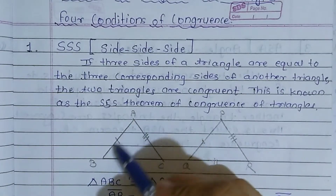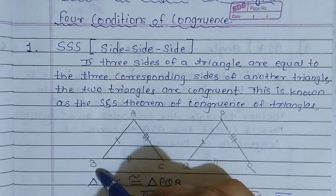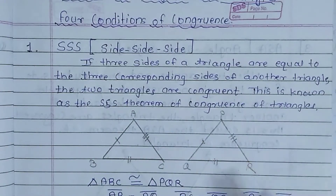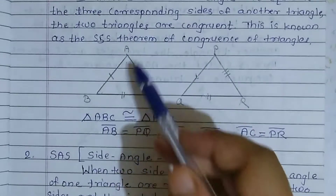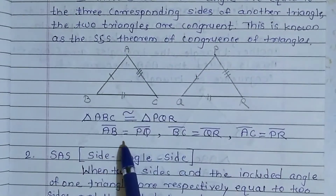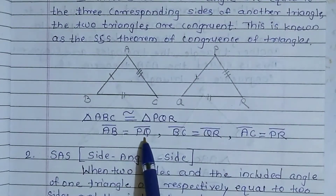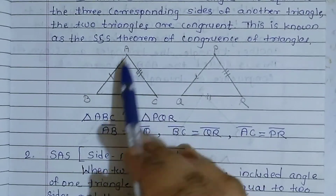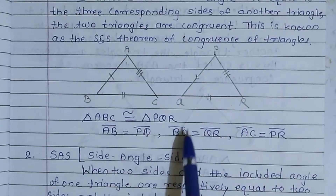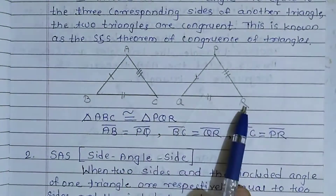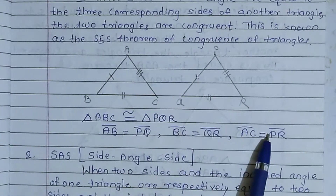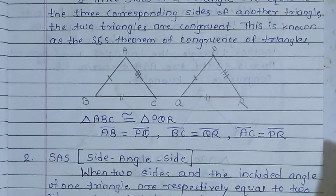Here we see triangle ABC and triangle PQR are congruent to each other. Why? Because AB is equal to PQ, BC is equal to QR, and AC is equal to PR. So that is the first theorem you have to understand.